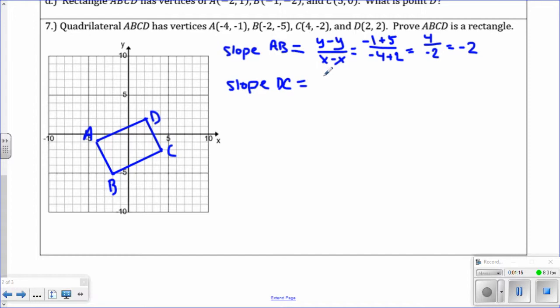Same formula. I'm going to start with point C. Y minus y, negative 2 minus 2, over 4 minus 2. We have negative 4 divided by 2, which again is negative 2. You can see that those two sides are parallel.